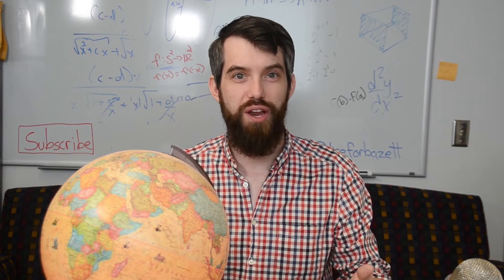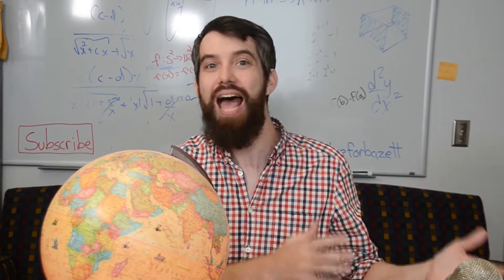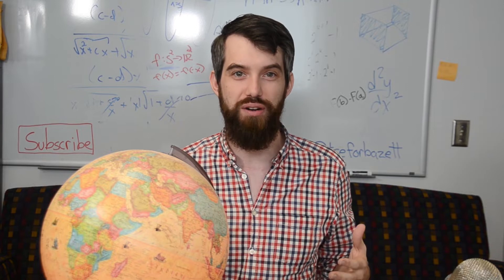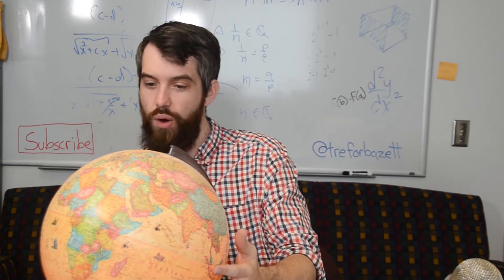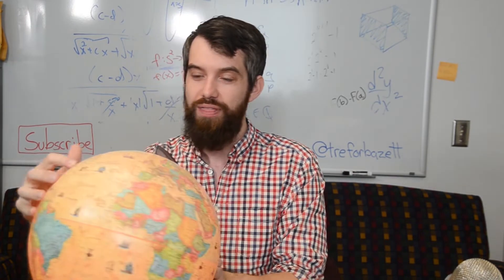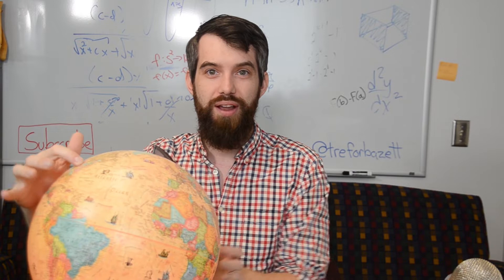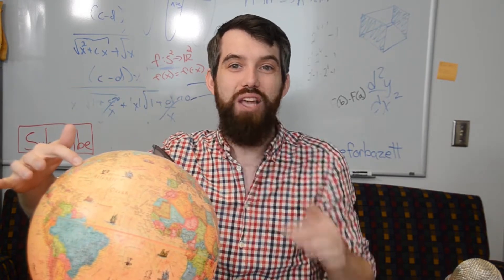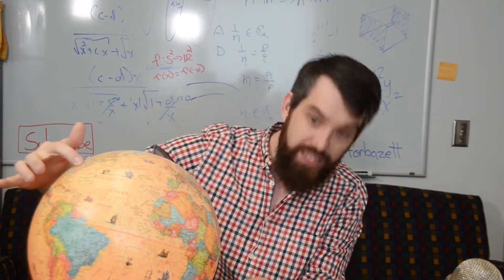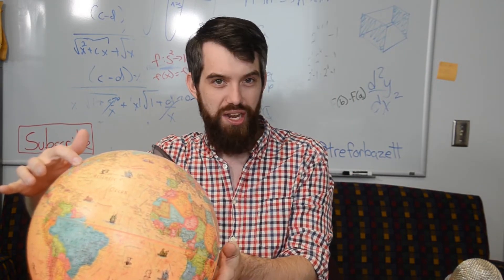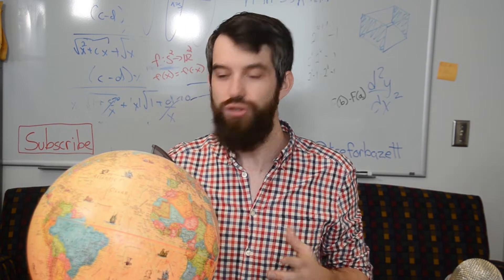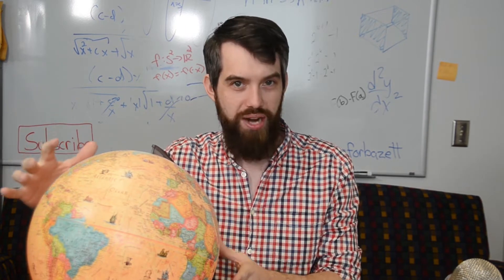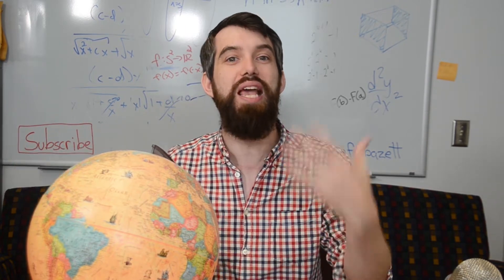Two points on a sphere are called antipodes if they're on exact opposite places on the sphere. For example, I'm here in Cincinnati, Ohio — that's about there — and the spot exactly opposite is somewhere down here in the Indian Ocean. Now, the question is: do these two points have the same temperature?